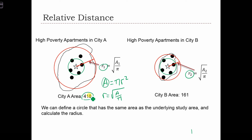One is going to use the area of City A over here to calculate the radius of the circle that has the same area as the study area. So this red circle has the same area as the green study area that I just drew. And similarly, this red circle has the same area as the polygon shaped by the City B boundary.